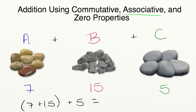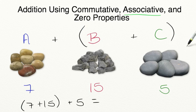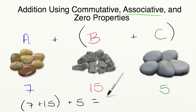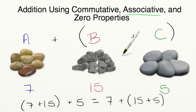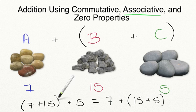Let's see what our parentheses would look like if instead of grouping piles A and B, we grouped piles B and C. Now we group all of the gray rocks together with a pile of yellow rocks on the side. We would write this as 7 by itself, plus in parentheses 15 plus 5, telling us how many gray rocks we have altogether. The associative property tells us that when adding numbers, it doesn't matter how you group them — you will still have the same sum.